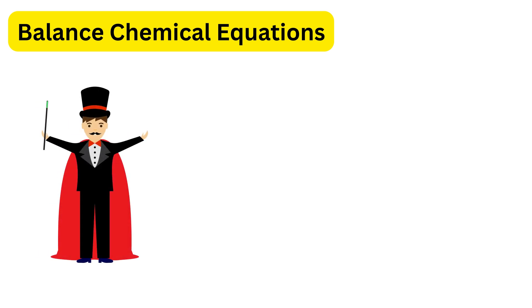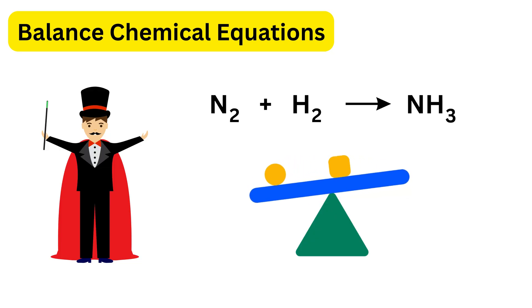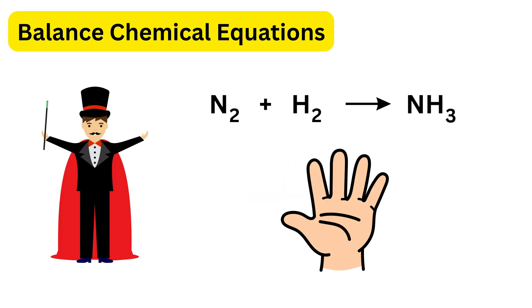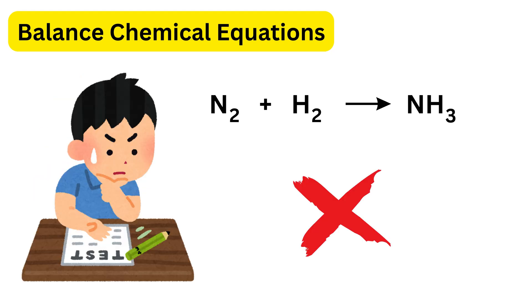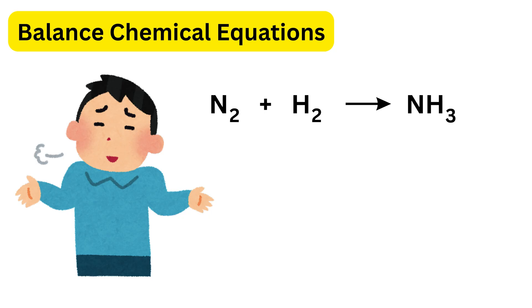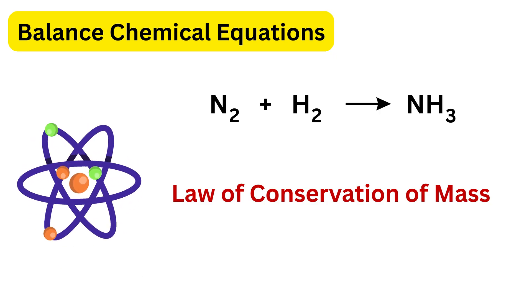Today I will be sharing with you a simple trick to easily balance chemical equations by looking at five different problems. Why do we balance chemical equations? The answer is not just to score marks in exams — the main reason is to follow the law of conservation of mass, which states that matter cannot be created or destroyed.